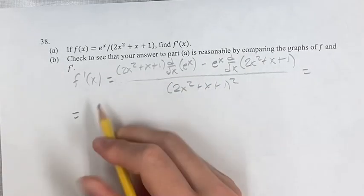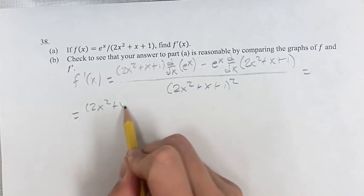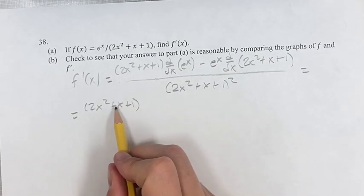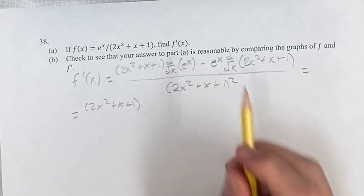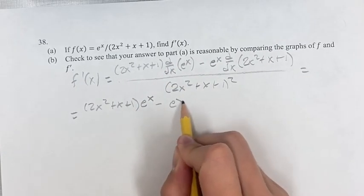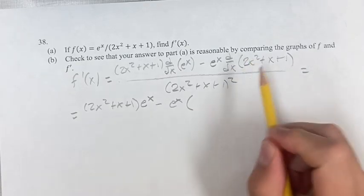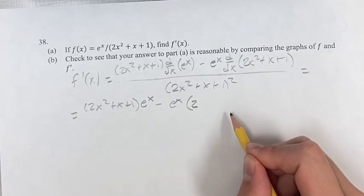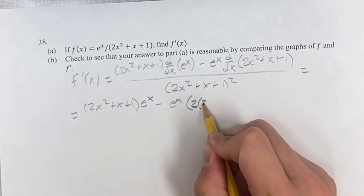Solving for these derivatives, keeping this first term the same. We have 2x squared plus x plus 1 times the derivative of e to the x, which is just e to the x, minus e to the x times the derivative of 2x squared. Get the coefficient out first. Then you bring down your exponent, 2,